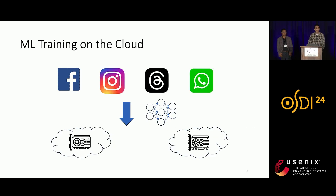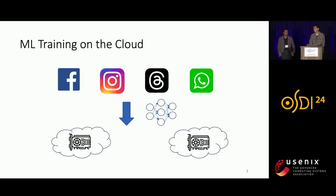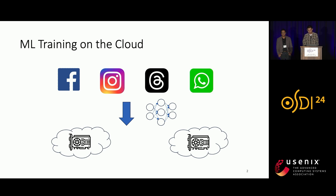The success of machine learning applications has resulted in ML training becoming one of the fastest-growing workloads in today's data centers. And due to the high cost of GPUs, both individual users and industrial companies heavily rely on the cloud to reduce the cost of training. For example, many of Meta's products rely on Meta's internal clouds to train different kinds of models.